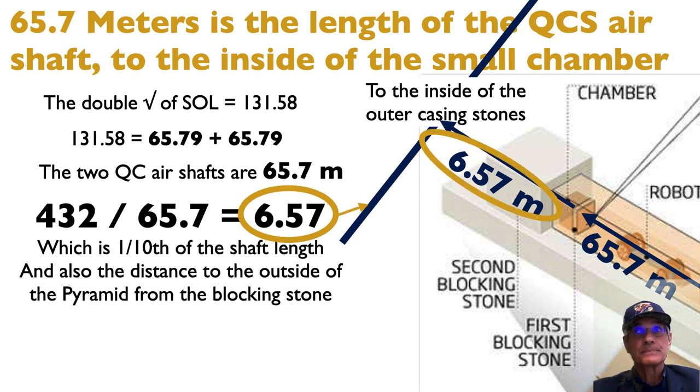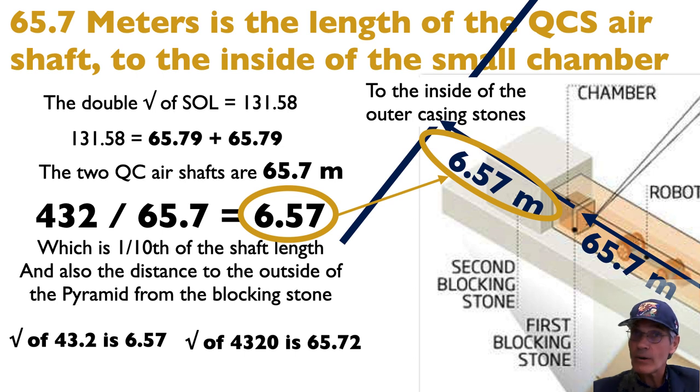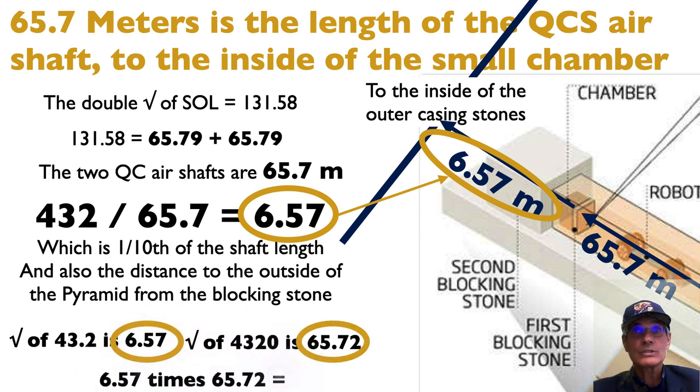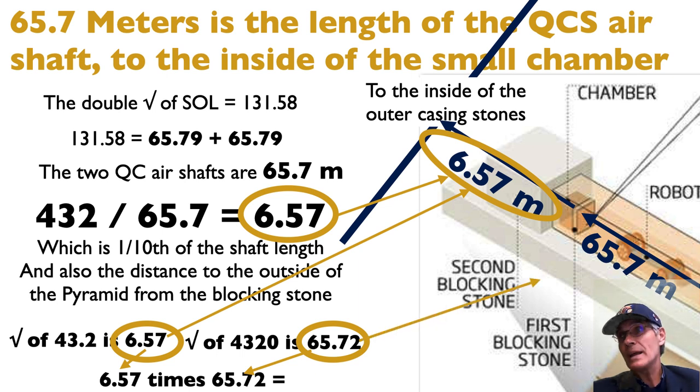So look at that. 65.7, the distance to the outside of the pyramid. The square root of 43.2 is 6.57. Wow. Incredible. The square root of 4320 is 65.72. So again, those two numbers, of course, we got from the square root of 43.2 and from the distance. And then the same thing with the 65.7. We got it from a square root of 4320. We also got it from an actual distance in the air shaft. So if you multiply those, it's 432. Now, Robert Grant pointed out to me that that's the fractal root.